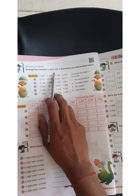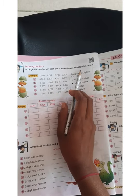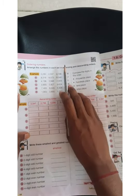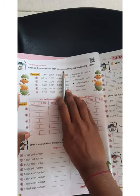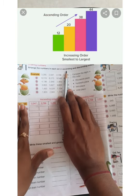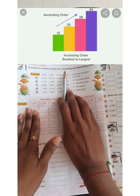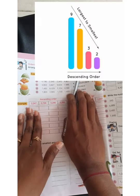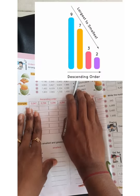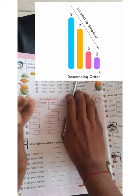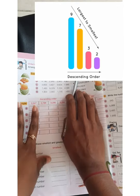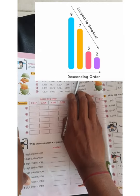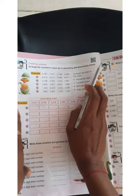Arrange the numbers in each set in ascending and descending order. Listen carefully. Ascending order means you have to arrange the numbers from smaller number to bigger number. And descending order means bigger number to smaller number — arranging in decreasing order.